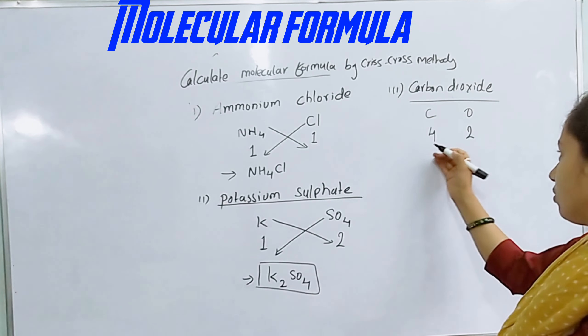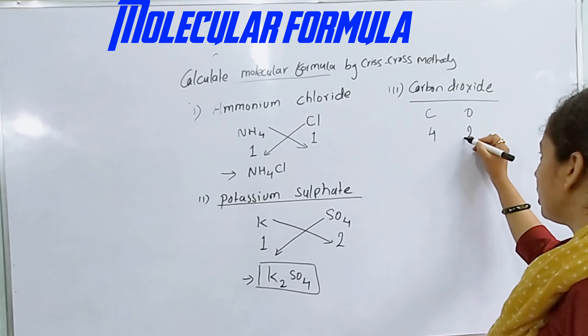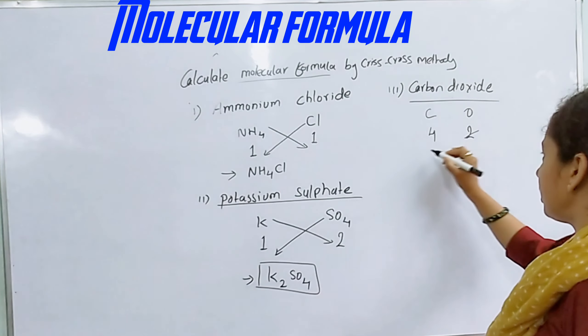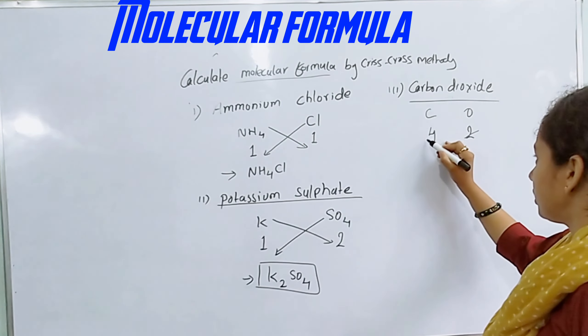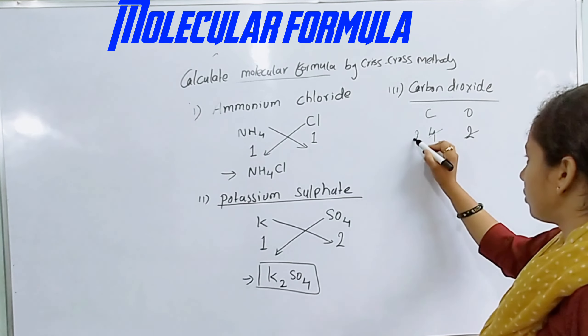So here sulfate has valence 4, and potassium has valence 2. We have 2. The cross method gives us K2SO4.